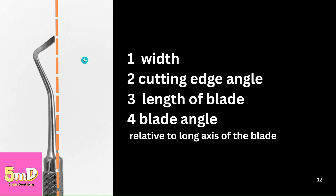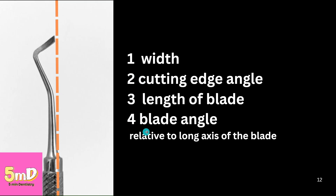The four-number instrument formula differs in that it has a new second number. The third number becomes the length of the blade, and the fourth number is the blade angle. So the new number is inserted in the second position. Remember: the fourth number is always the blade angle.